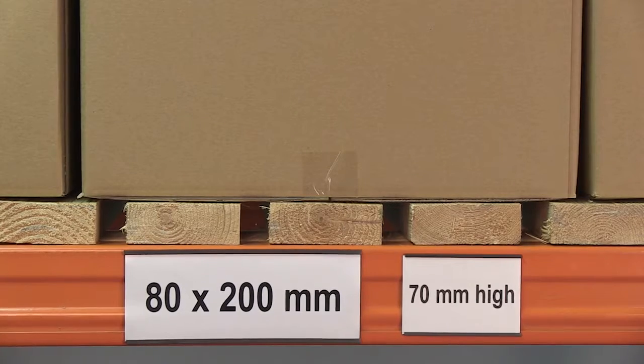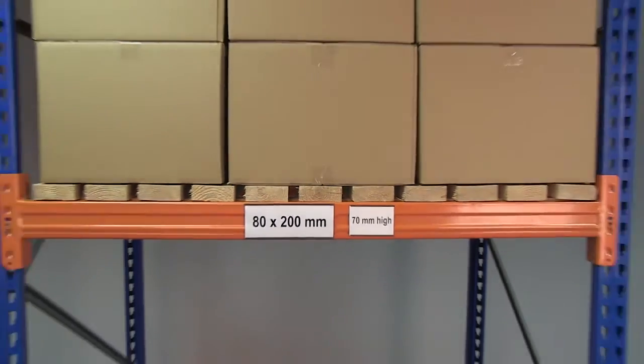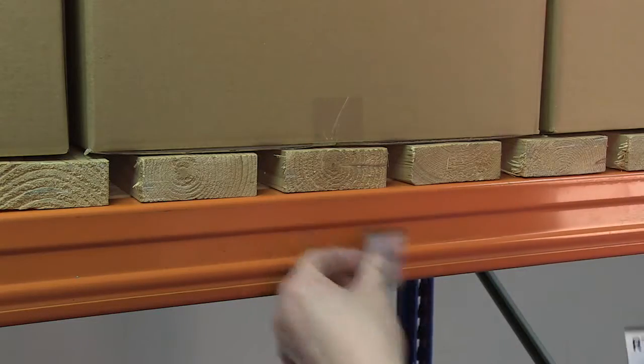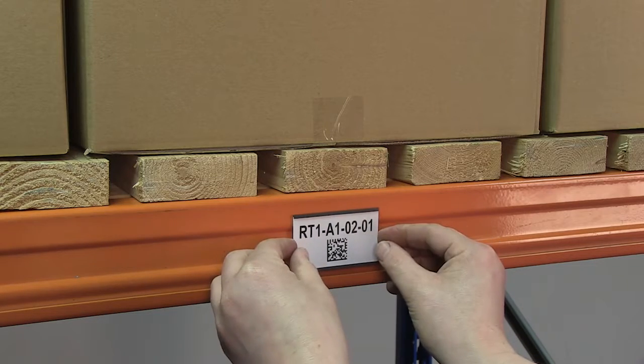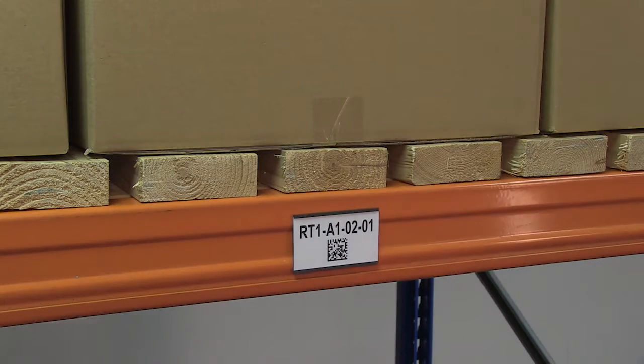70 and 80mm high holders are perfect for pallet racking beams. Magnetic holders offer the flexibility to quickly and easily change the position of the holder and are ideal for cold store environments.